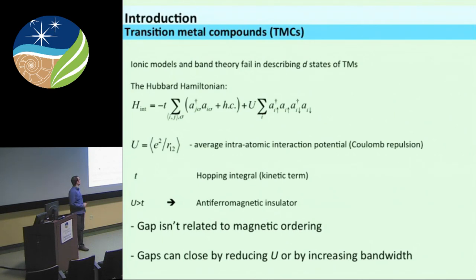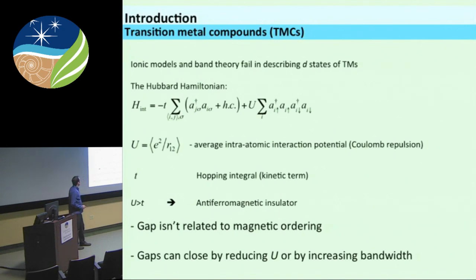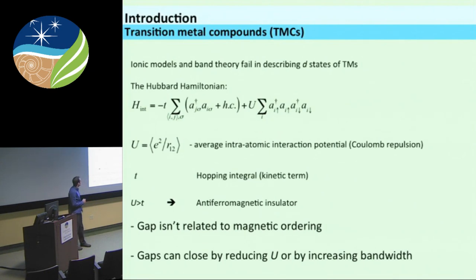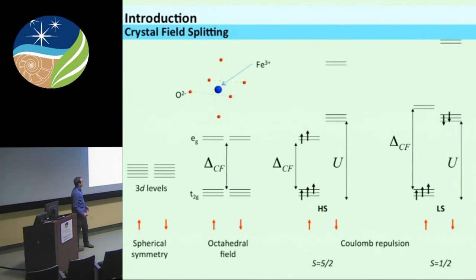The difficulty with transition metal compounds is that both ionic models and band theory fail in describing the d-states of the transition metals. What Hubbard came up with was an interaction Hamiltonian that includes a kinetic term — the hopping integral — and an intra-atomic interaction potential, which is basically a Coulomb repulsion but only on the same site. Usually U is larger than T, and what we typically get is an antiferromagnetic insulator. The gap is not related to magnetic ordering but only to the existence of local magnetic moments. The gap can either close by reducing U or by increasing the bandwidth.